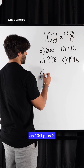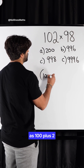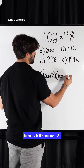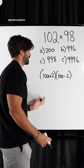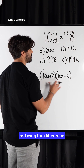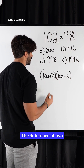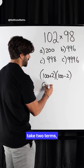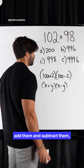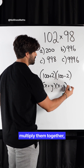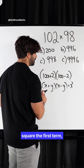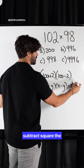So I can rewrite this as (100 + 2) times (100 - 2). Now here you should notice this form as being the difference of two squares. The difference of two squares says if you take two terms, add them and subtract them, multiply them together, all you do is you square the first term, subtract, square the last term.